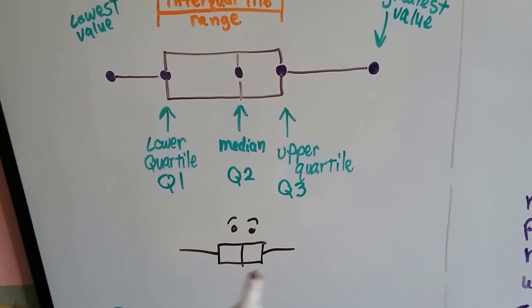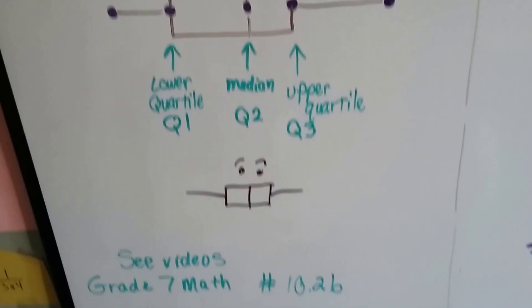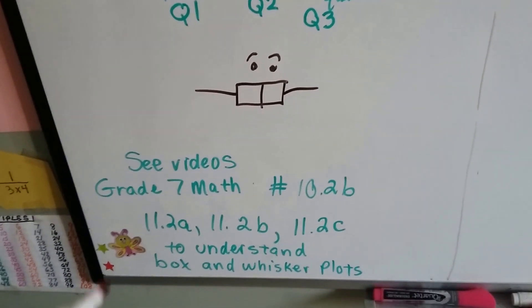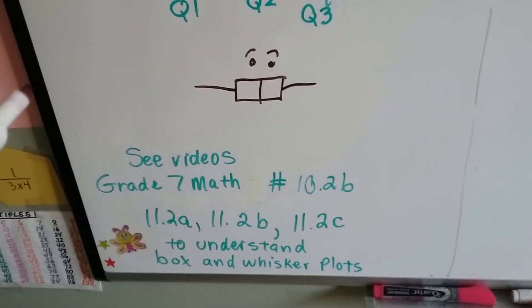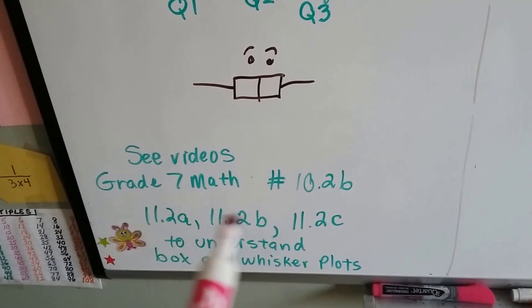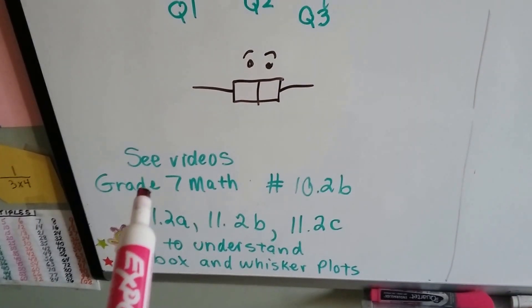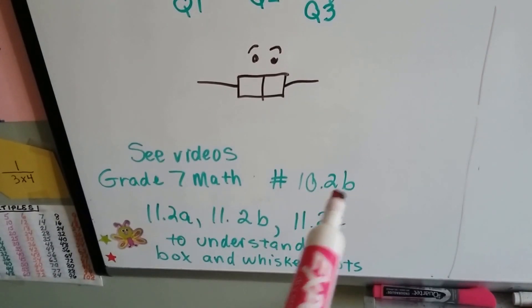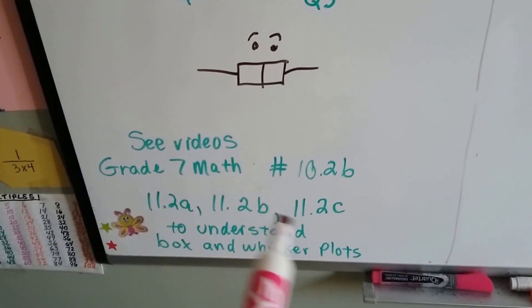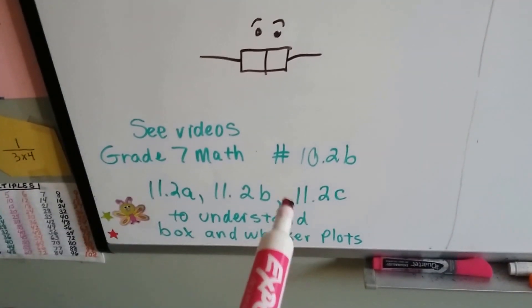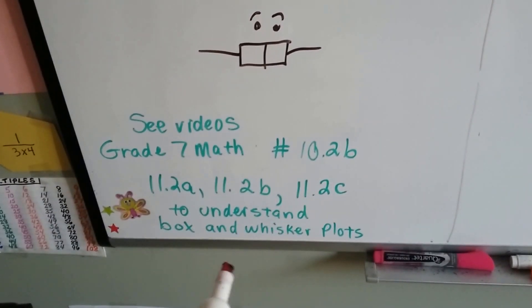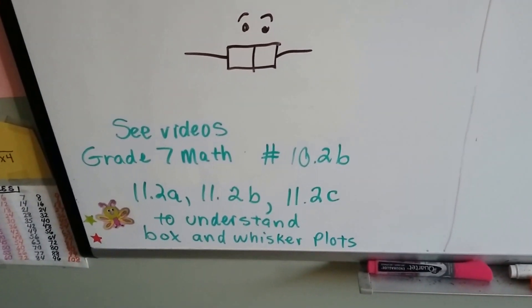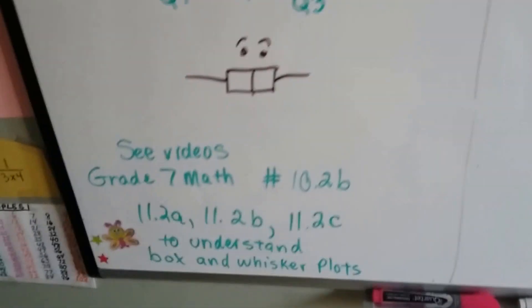It kind of looks like a cat or an animal with whiskers, doesn't it? Now, if you're completely confused and you don't know what I'm talking about, I would go back to this playlist to 10.2B or to 11.2A, B, or C. And I think especially 11.2C, I really talk about box and whisker plots. Then you can understand them a little bit more before seeing this one. I'm kind of wrapping up in this video.